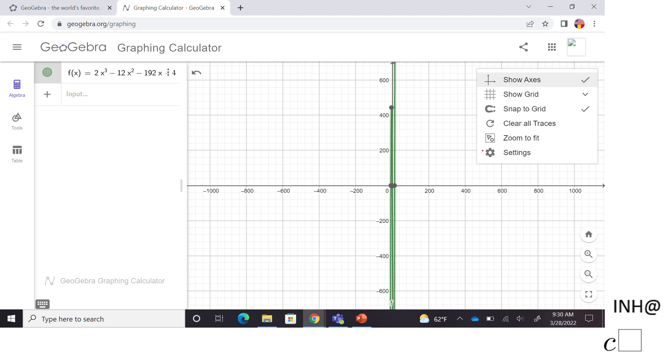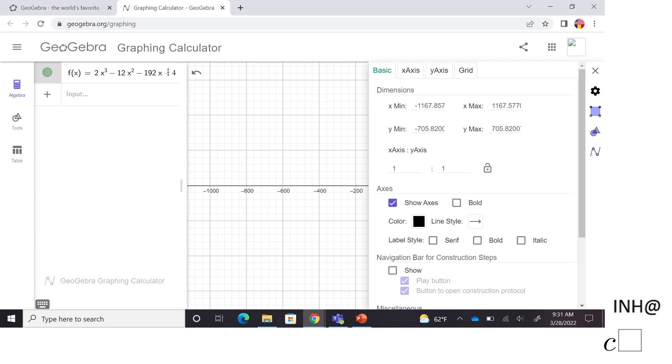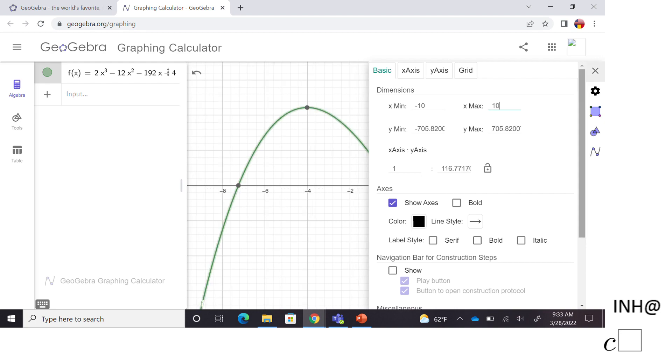By using this button, the settings button, once you click here you have settings. Click on that and you get this window where you can adjust based on what you think will work for you. I use negative 10 to 10.